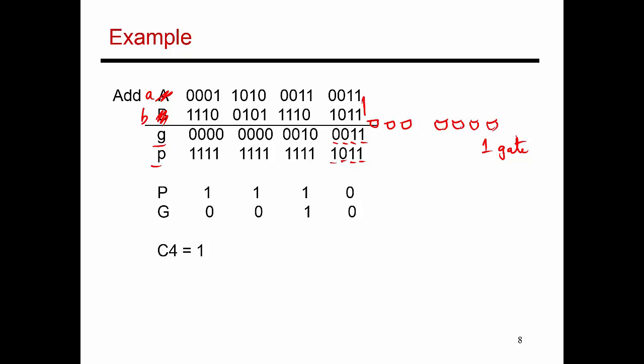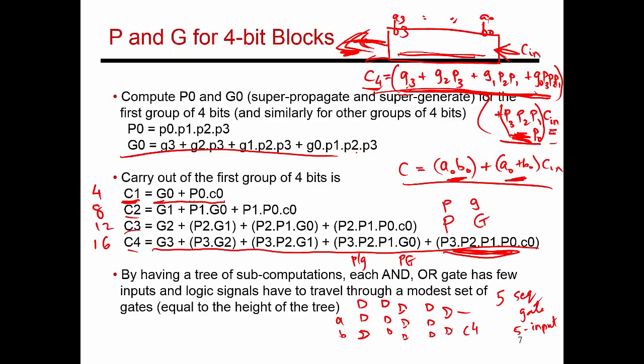Next step is to compute the values of capital P and capital G, which is based on this collection of 8 bits. The four P values and the four G values for that 4-bit unit. So I have to go back to this equation here.